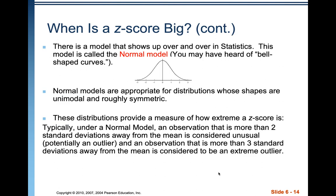Most of the time when we use z-scores, we're going to be using them with the normal model. Remember, you can find z-scores for observations in any distribution. But we're going to use some things about the normal model to convert z-scores to probabilities — and these apply only to normal distributions. If you have a skewed distribution, you can't move beyond the z-scores.